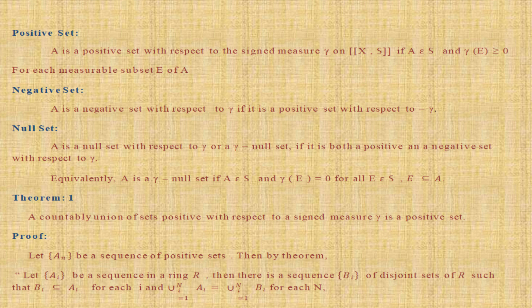Theorem 1: a countable union of sets positive with respect to a signed measure ν is a positive set. The signed measure satisfies three conditions: first, all values are positive; second, ν(∅) = 0; third, ν(∪_{i=1}^{∞} A_i) = Σ ν(A_i). We will verify these three conditions.